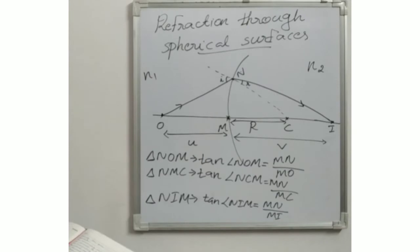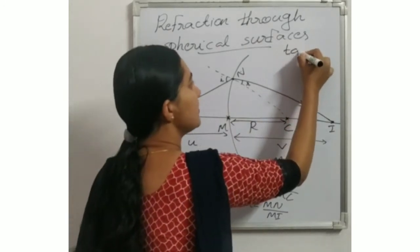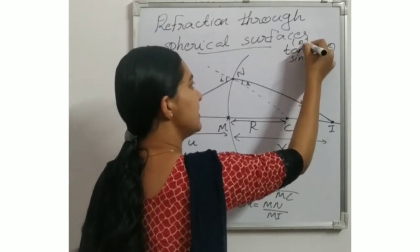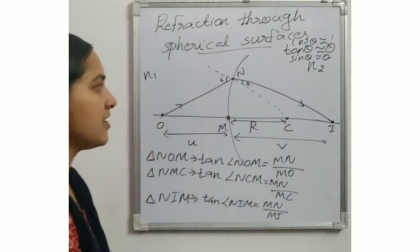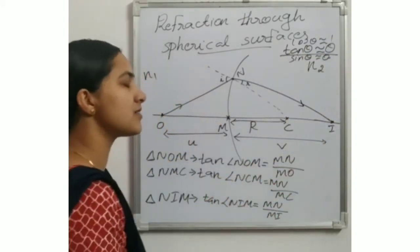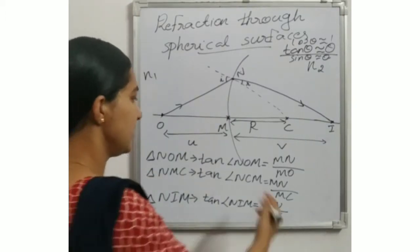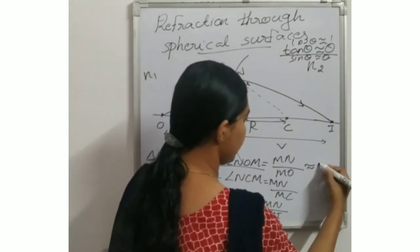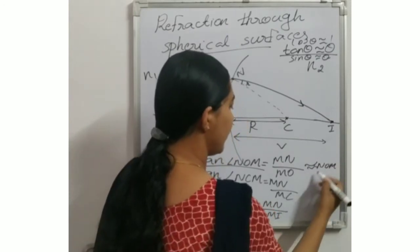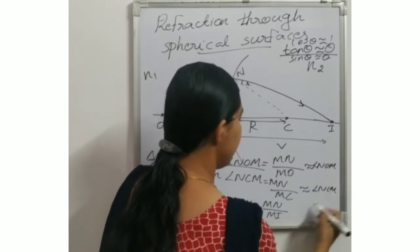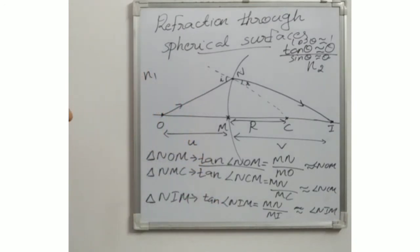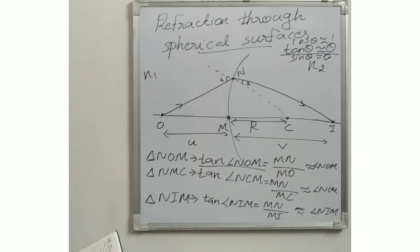Now, for small angles, sin θ is approximately equal to θ, and cos θ is approximately equal to 1. Therefore, tan θ is approximately equal to θ for small angles. So here, instead of tan(N-O-M), we can write approximately angle N-O-M. Similarly, angle N-C-M and angle N-I-M follow the same approximation.